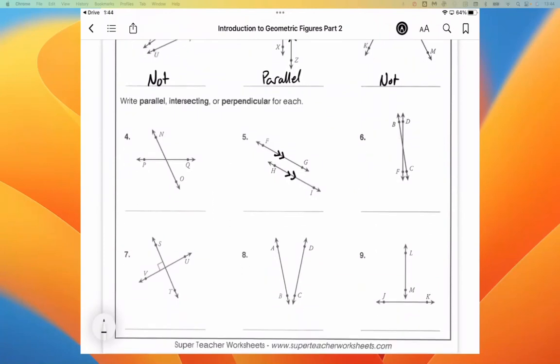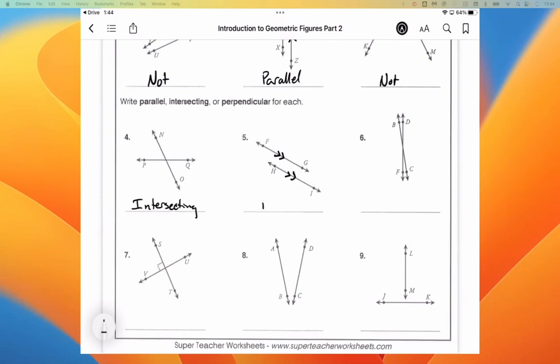Parallel, intersecting, or perpendicular for the next set here. We have intersecting, we have parallel, and we have intersecting again.